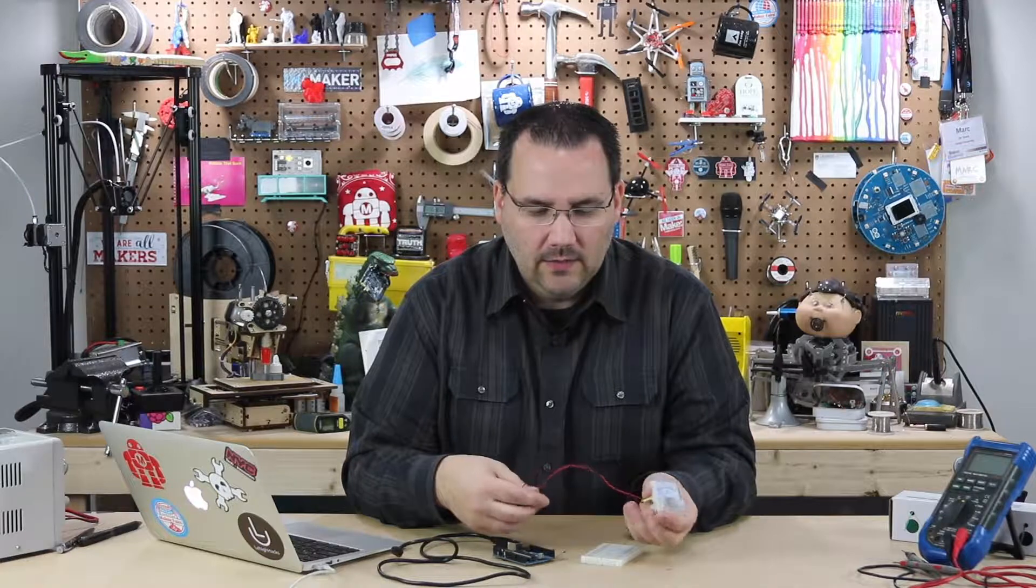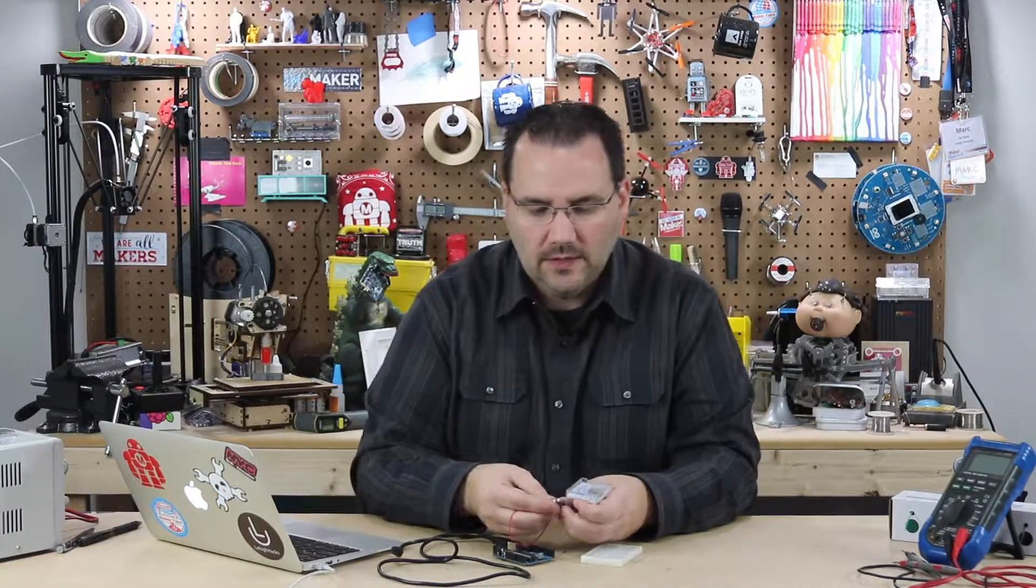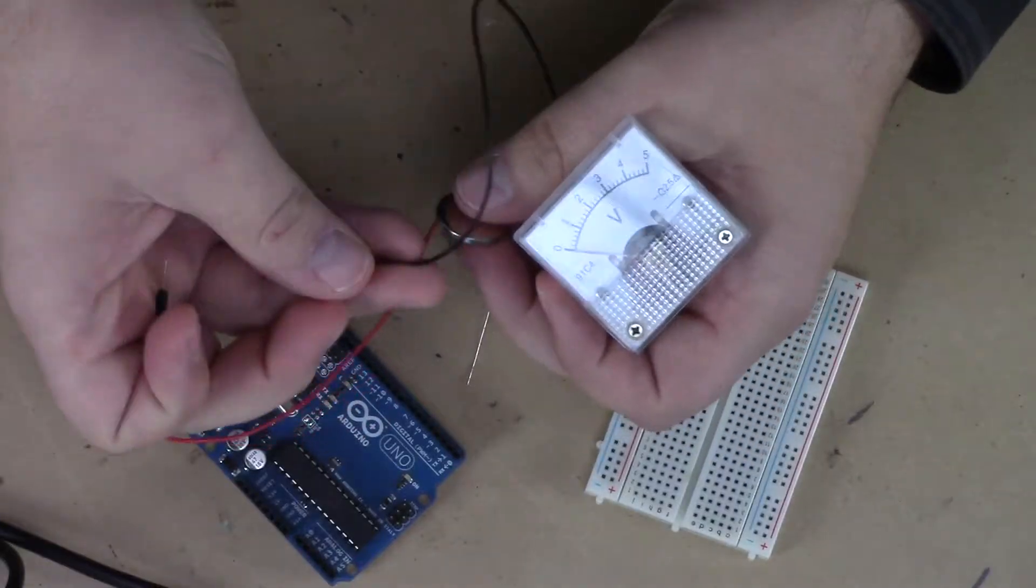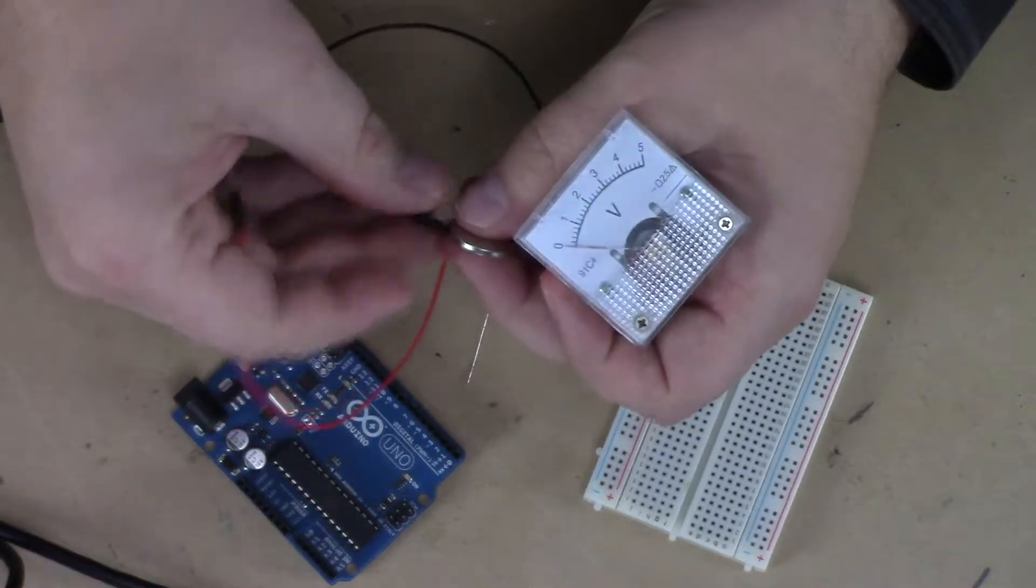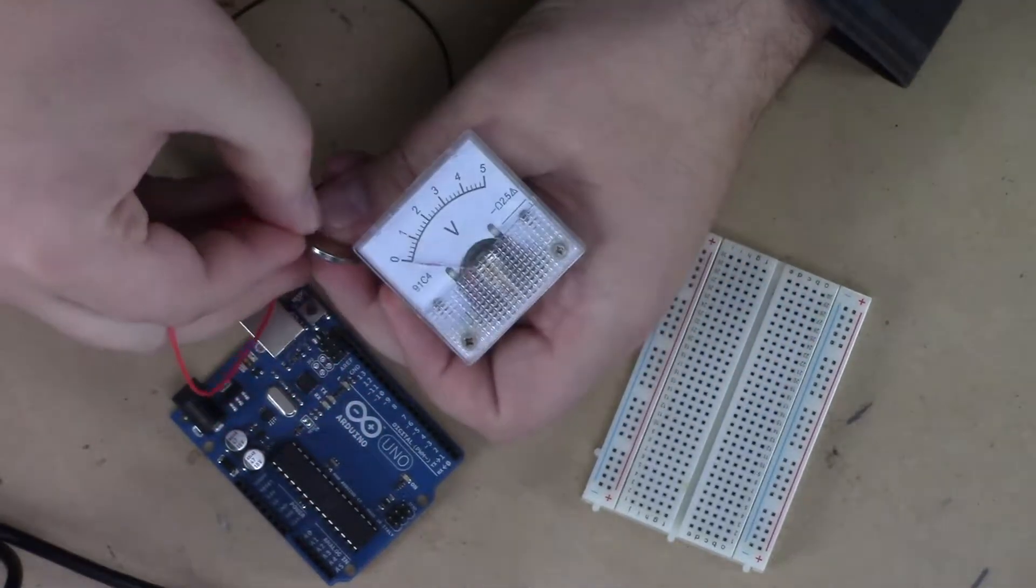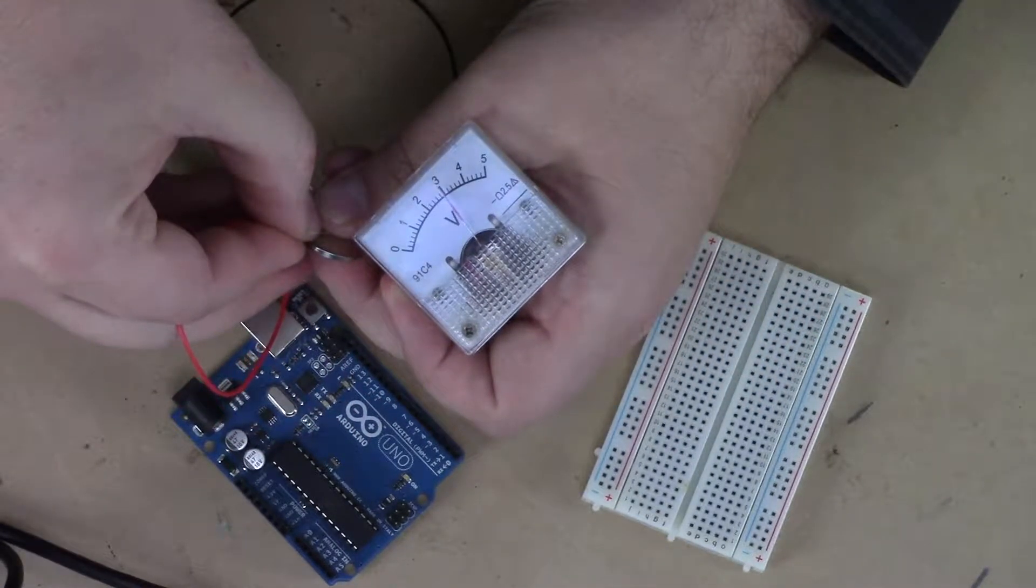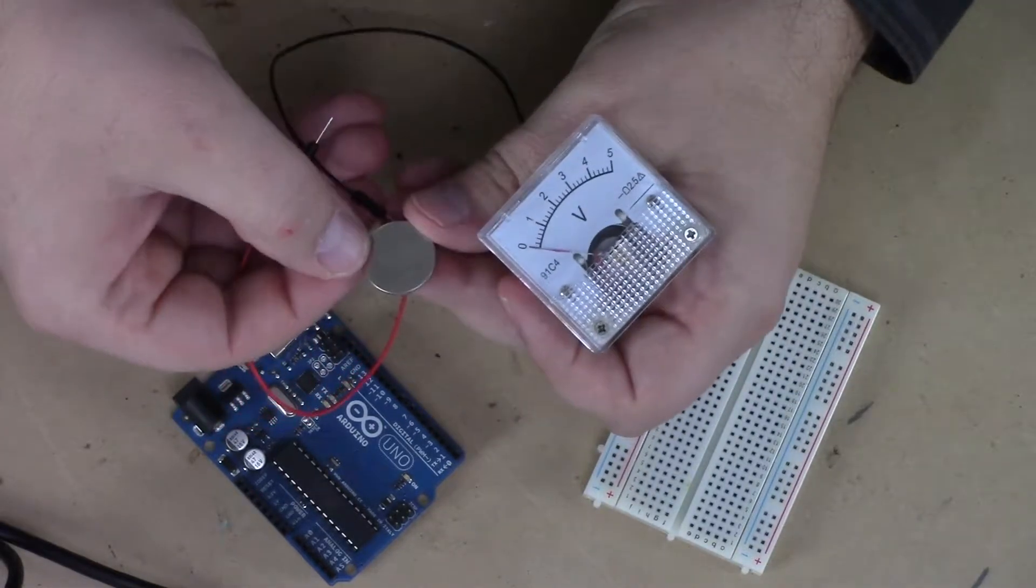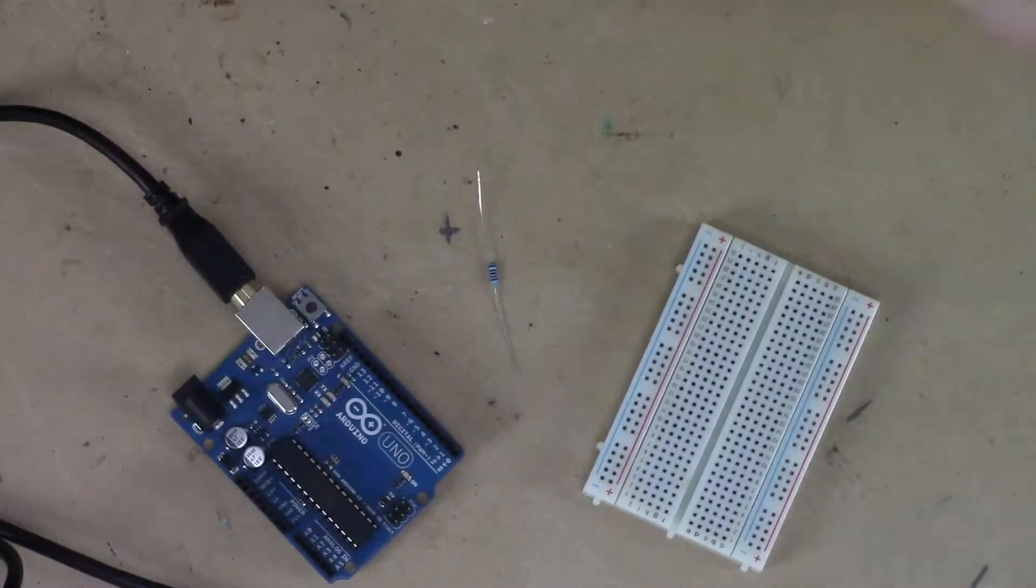So let's start by giving it a quick test. If I just take a coin cell battery and put the negative on the bottom of that and the positive on the top, look at that, getting just about three volts, which is exactly what this coin cell battery should give me.